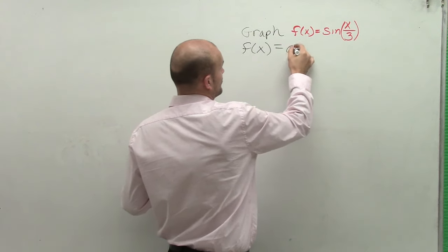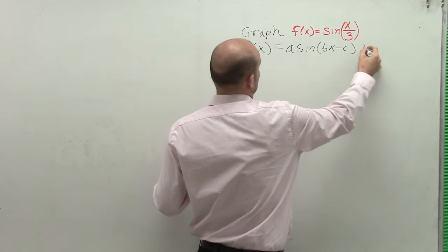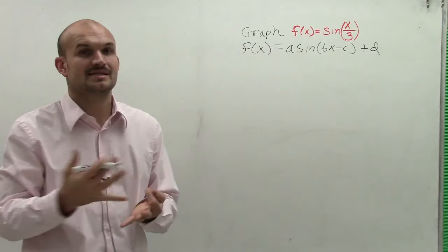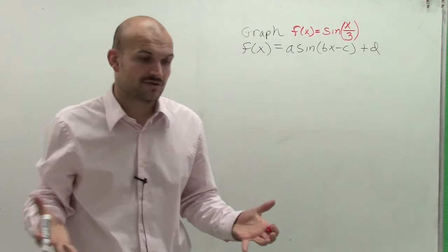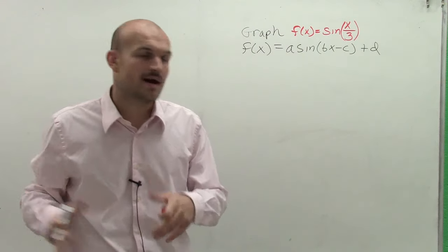So a standard form, we had a times sine of bx minus c plus d. And remember your a, b, c, and d, those are all going to affect your graph. So if we don't have one of them, their alteration is not going to happen.